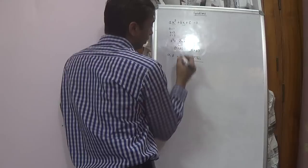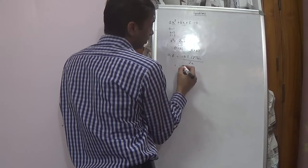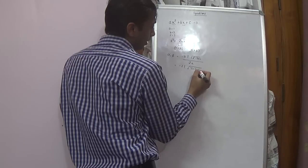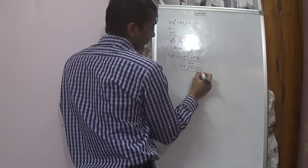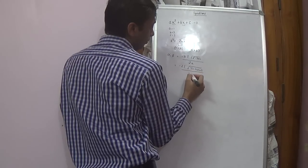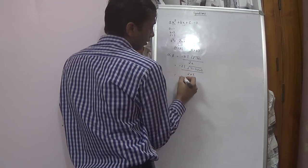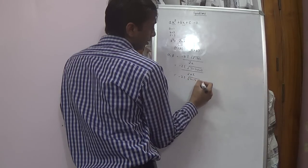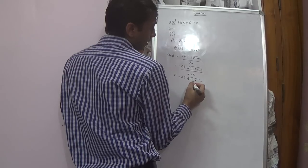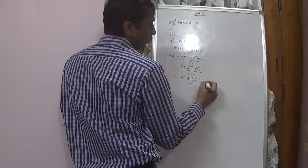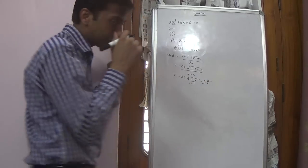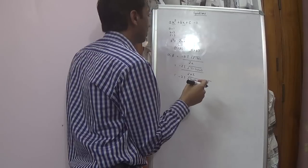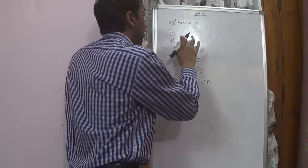Solving this particular example: minus B is minus 2, plus or minus B square is 4, minus 4 into 1 into 3, over 2 into 1. This gives minus 2 plus or minus (4 minus 12), which is minus 8. The root of minus 8 is not possible, so these are imaginary roots.